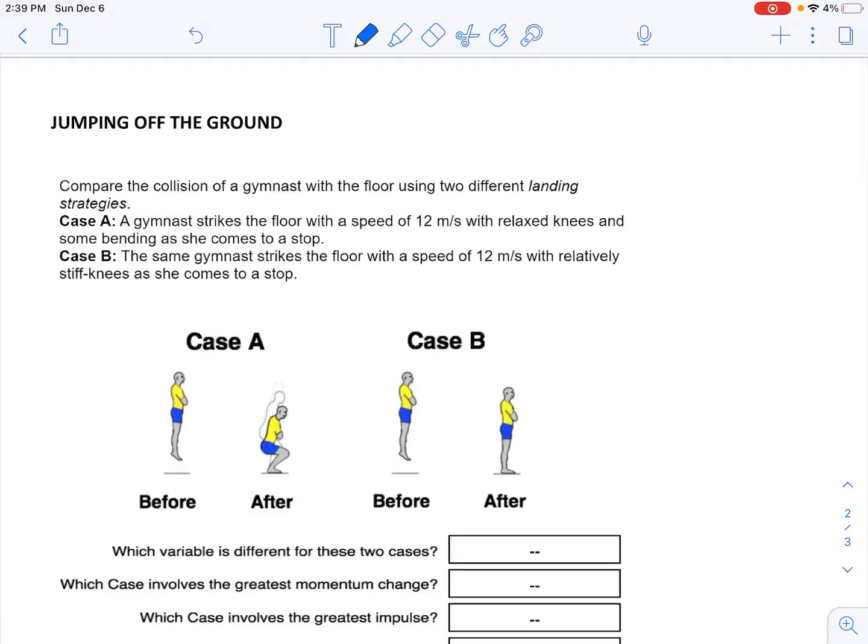Jumping off the ground. So in both of these cases you leave the ground at the same speed, that is 12 meters per second. So it takes an impulse to do that, right? You have to push off the ground.